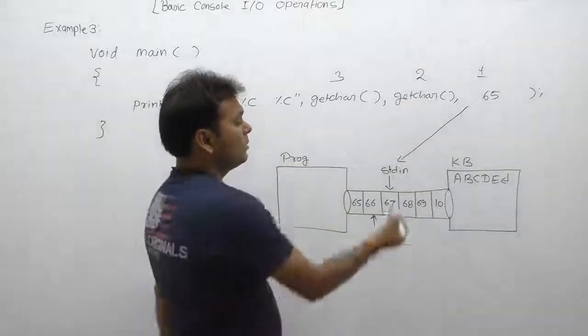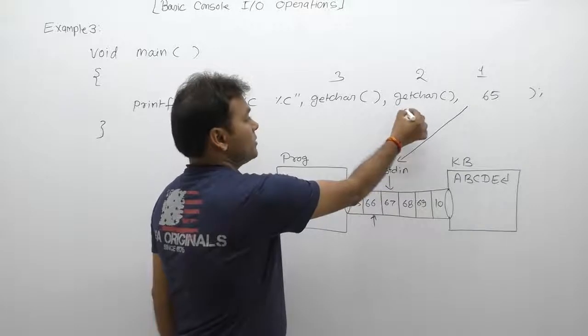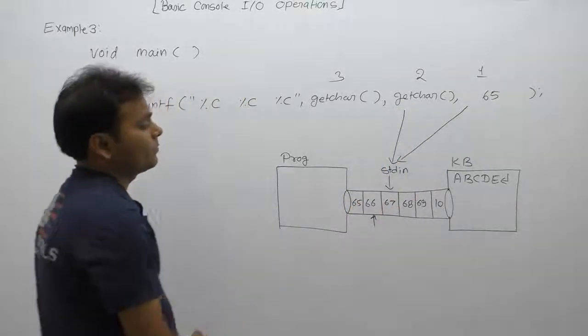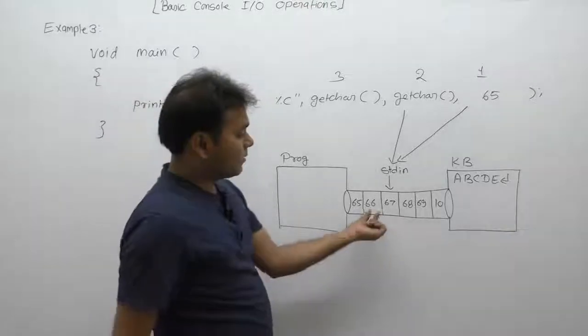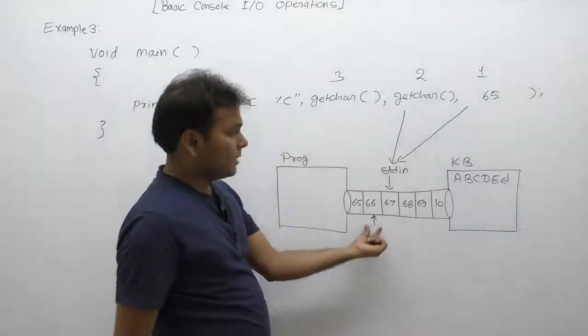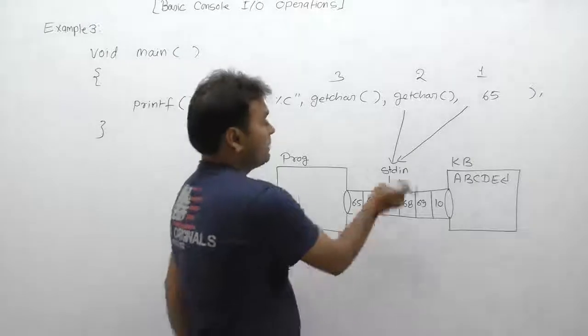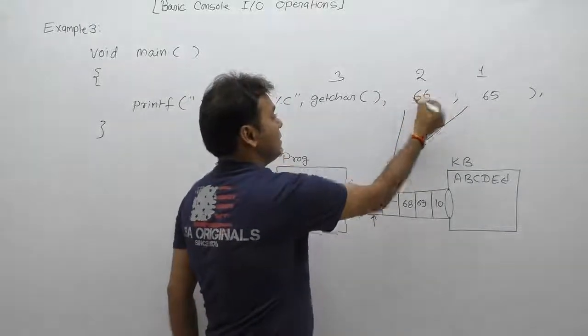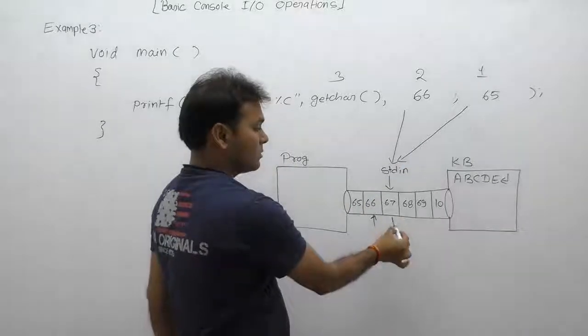It will read ASCII value from current byte. Current byte value is 66. Next time it will return 66, then buffer pointer will move to the next byte. It will move to the next byte, like that.